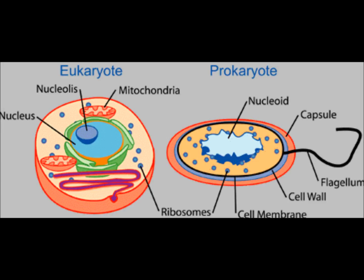There are two types of cells pertaining to the nucleus: those with a nucleus, known as eukaryotic cells, and those without a nucleus, also known as prokaryotic cells.